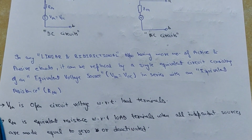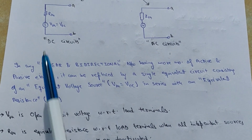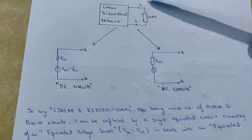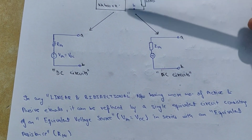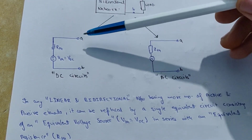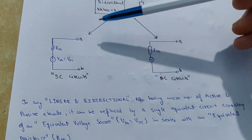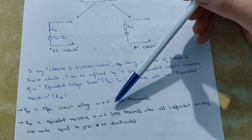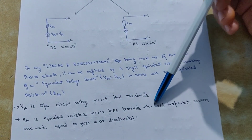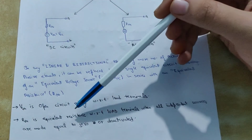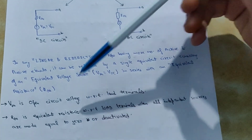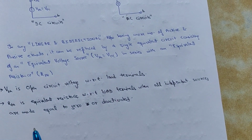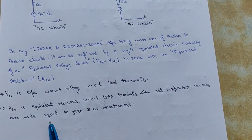This is the main point. Vth is the open circuit voltage with respect to load terminals. These two are our load terminals and Vth is the open circuit voltage with respect to them. Rth is the equivalent resistance between load terminals when all independent sources are made equal to zero. This statement is very important: when all independent sources are made equal to zero.